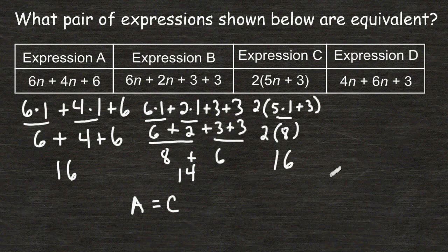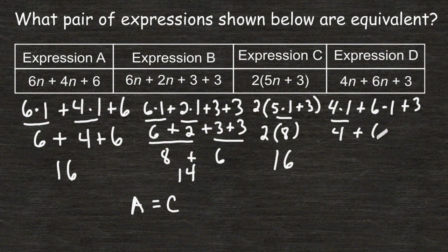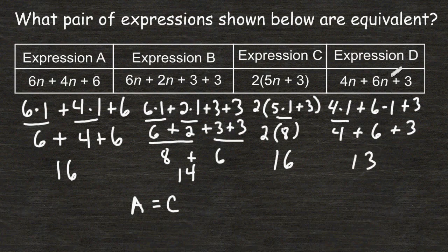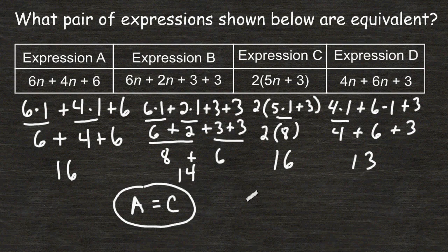And if we want we can substitute the number 1 in for n for expression D just to make sure that that is not equivalent to either expressions A, B, or C. So really quickly we are going to take 4 and multiply that by 1, and we are going to add that to the product of 6 times 1 and then add 3 at the end. So we have 4 plus 6 plus 3. And when we add these three numbers together we get a total of 13. So expression D is an expression that is not equivalent to any of the other three expressions. So we are going to stick with the answer: Expression A is equal to expression C.